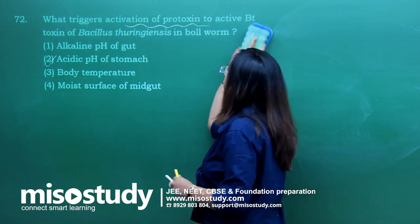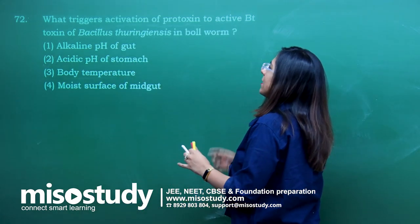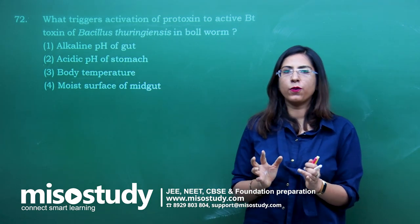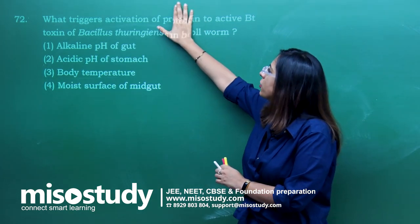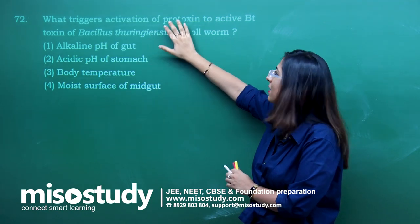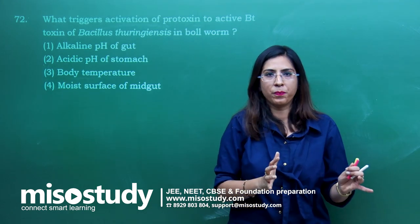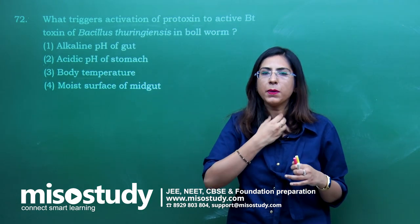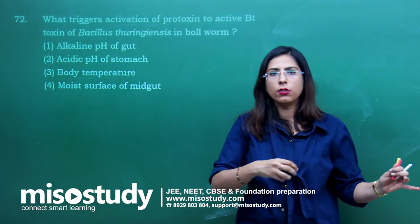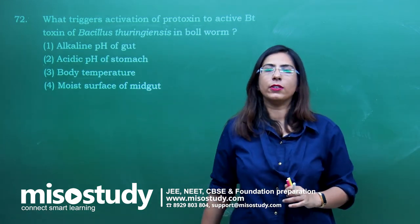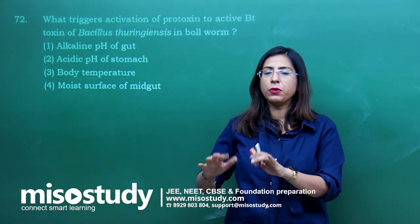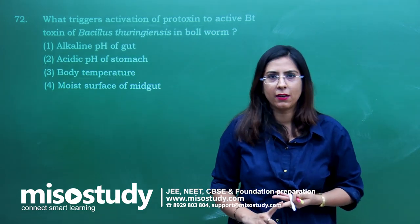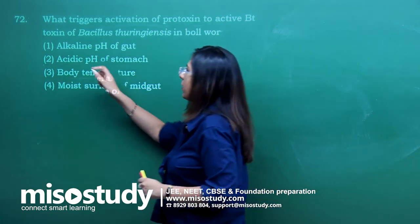Question number 72 — from biotechnology applications. What triggers activation of protoxin to activate BT toxin of Bacillus thuringiensis in a bollworm? The toxin produced by Bacillus thuringiensis is actually a protoxin — an inactive form. When a bollworm consumes it, the alkaline pH in their gut converts the protoxin into the active toxin form. That toxin causes perforation in the gut leading to death of the insect. This makes plants resistant to pests belonging to Coleoptera, Dipterans, and Lepidoptera. The correct answer is option A.